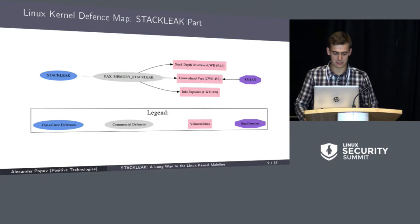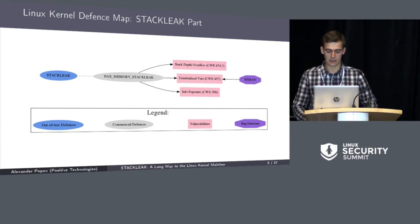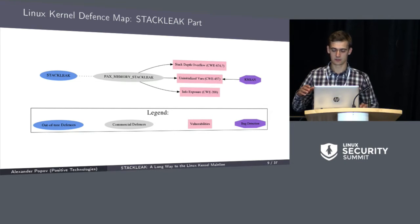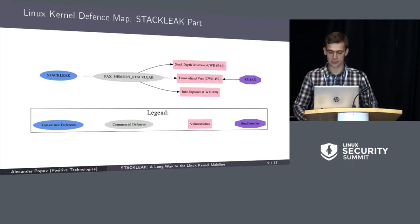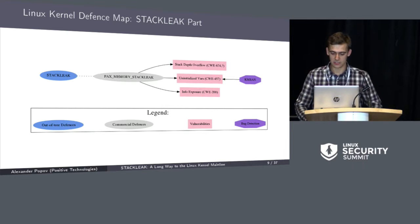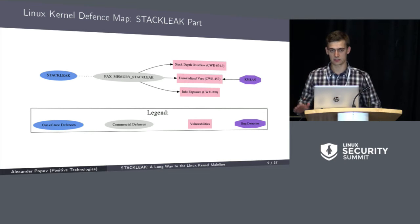StackLeak is an out-of-tree defense which is going to the mainline. It is inspired by PaX Memory StackLeak. It interacts with three kinds of kernel vulnerabilities: stack depth overflow, uninitialized variables attacks, and information exposure. These arrows on the diagram don't mean that StackLeak mitigates those kinds of bugs — they mean that there is some interconnection, which I will describe soon.